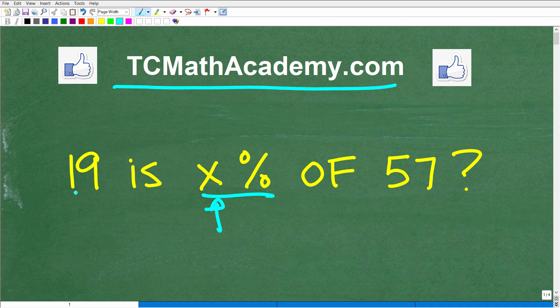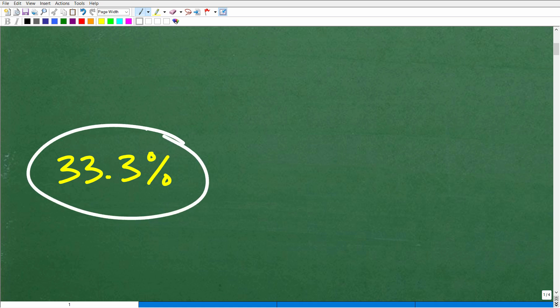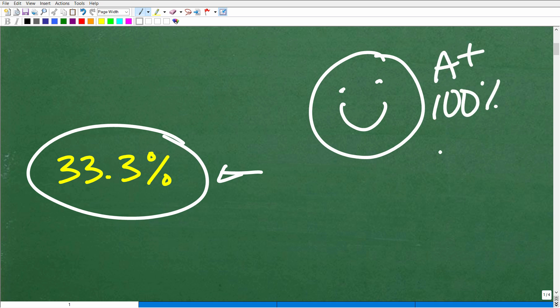When it comes to percent, there's a couple of different ways that percent can be taught. Some of you might have been taught percent in one way, others another way. Whatever way you learn percent, it is correct as long as you understand what you're doing. Okay, so let's go ahead and take a look at the answer. 19 is X percent of 57. What is X? Well, the complete answer is 33.3%.